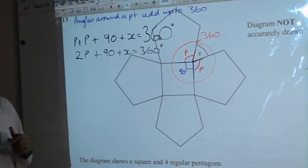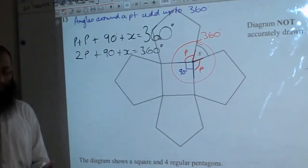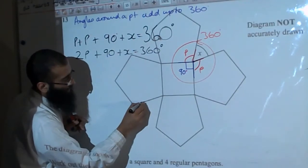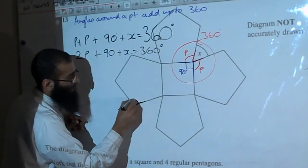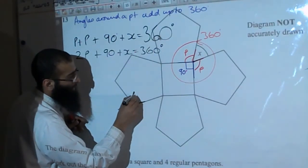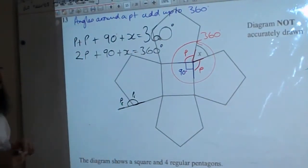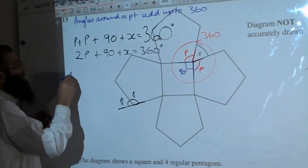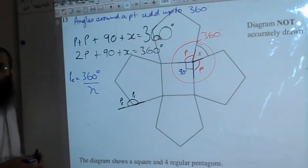Now we need to work out the internal angle of a pentagon. If we extend a side, the internal angle and external angle are labelled. The external angle of a regular polygon equals 360 divided by the number of sides. How many sides does a pentagon have? Five.